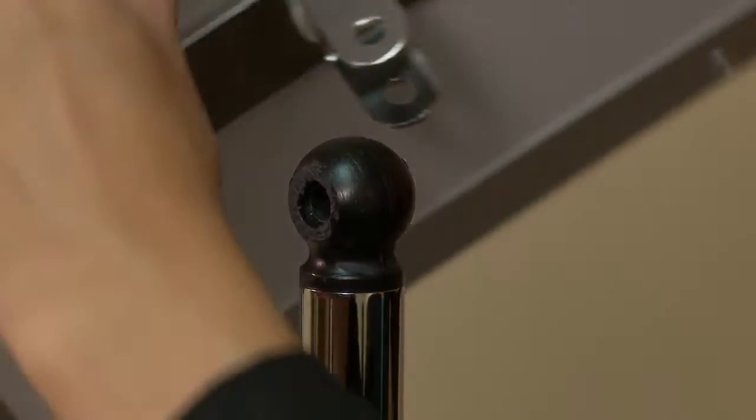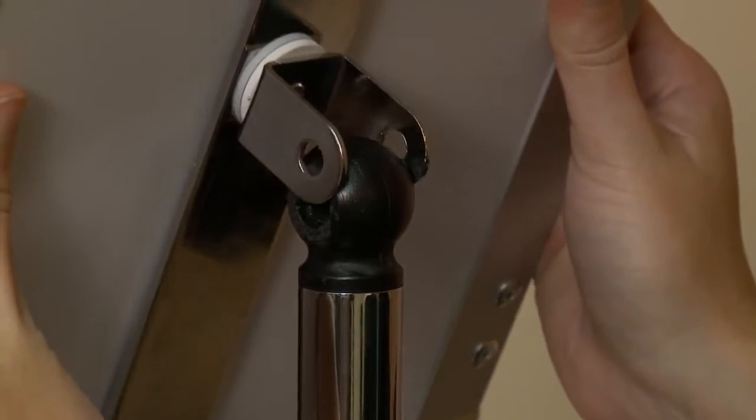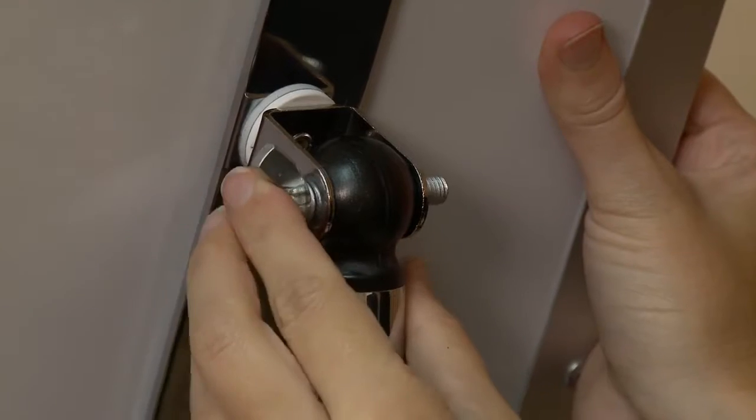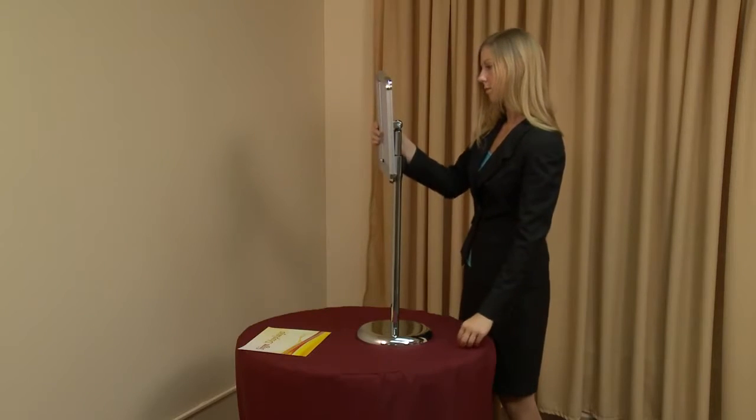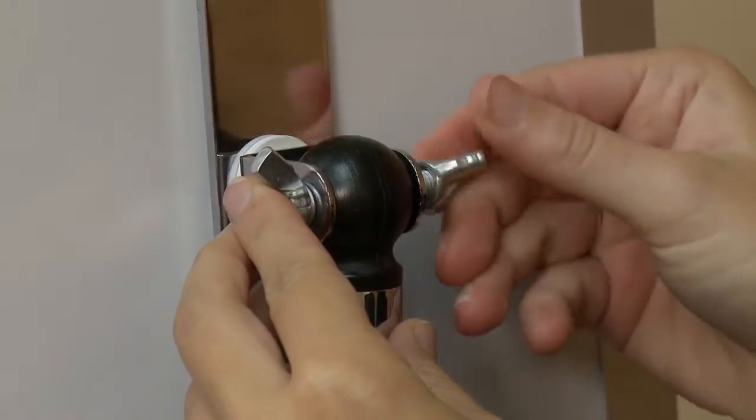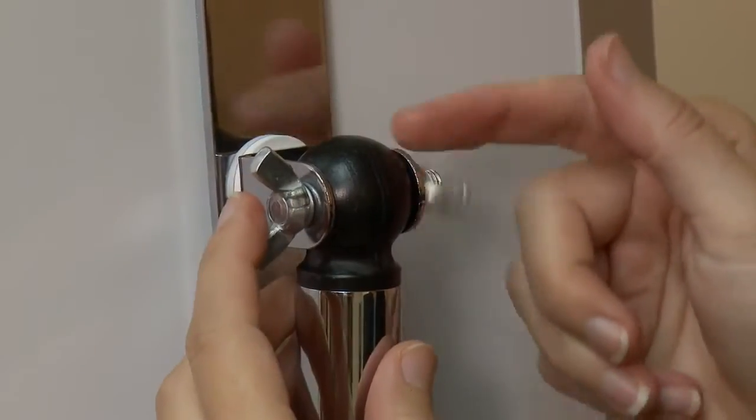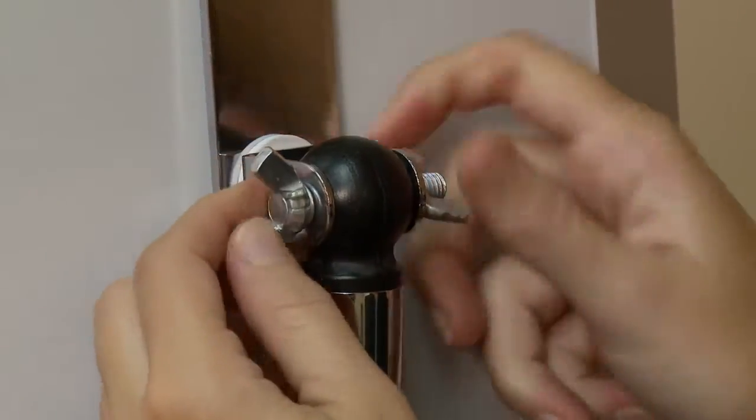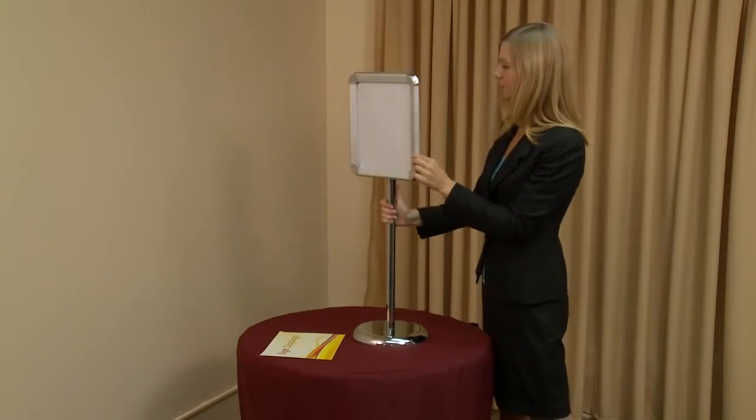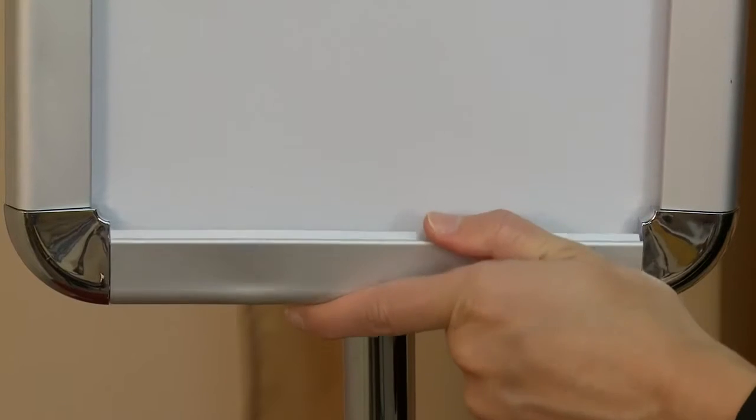Next, align the snap frame's bracket with the pole's ball joint and insert the wing nut screw through the joint and bracket. Insert the second wing nut and tighten to secure. To install the graphic, open the four snap edges and remove the clear plastic cover.